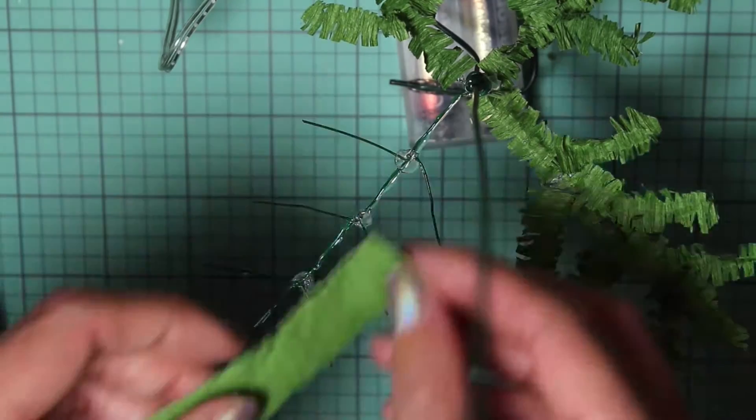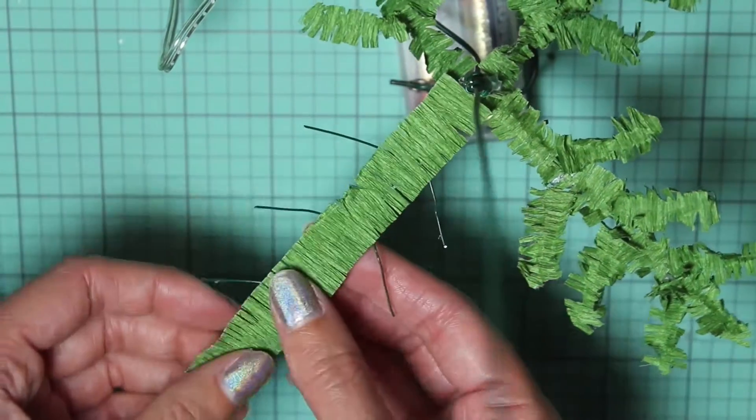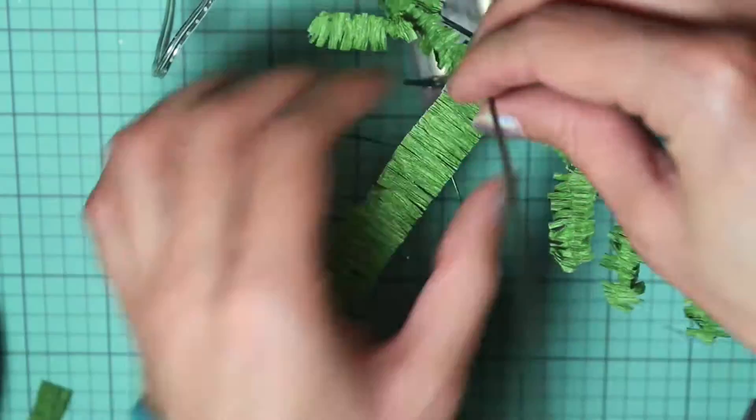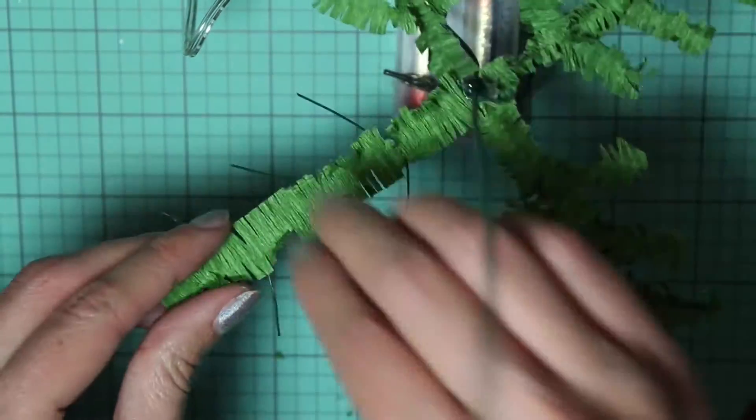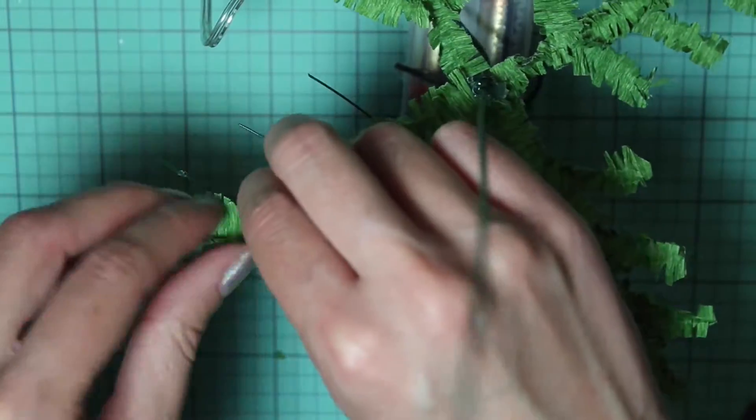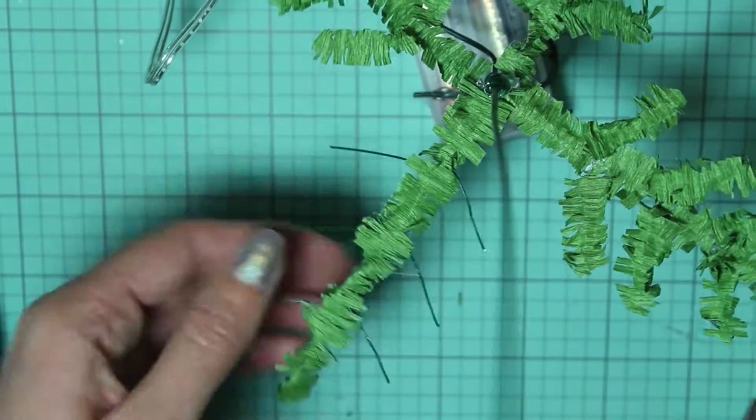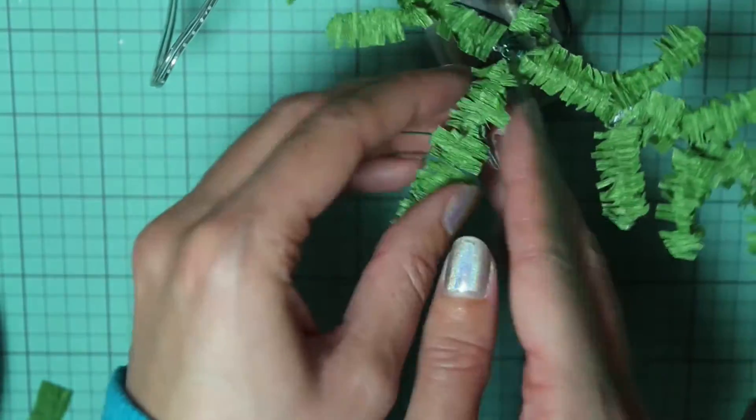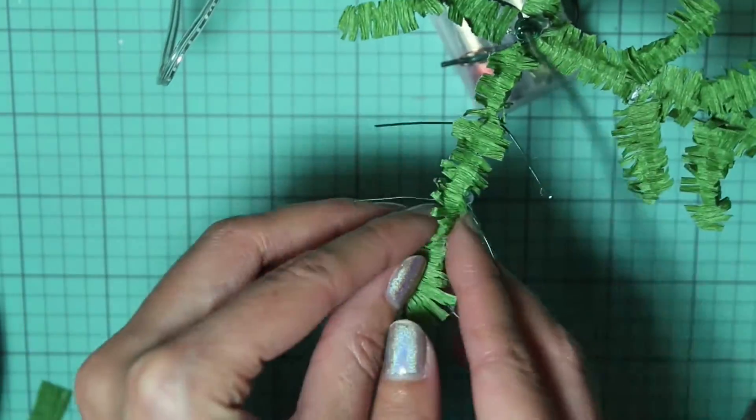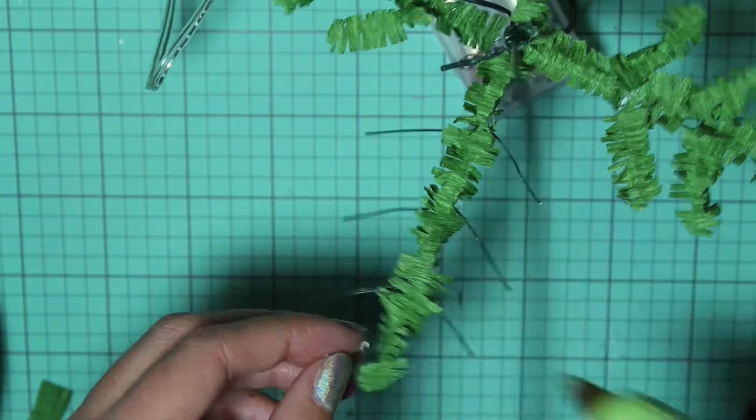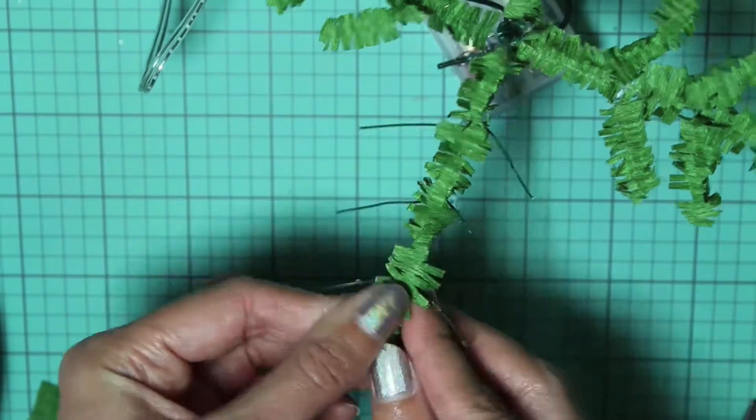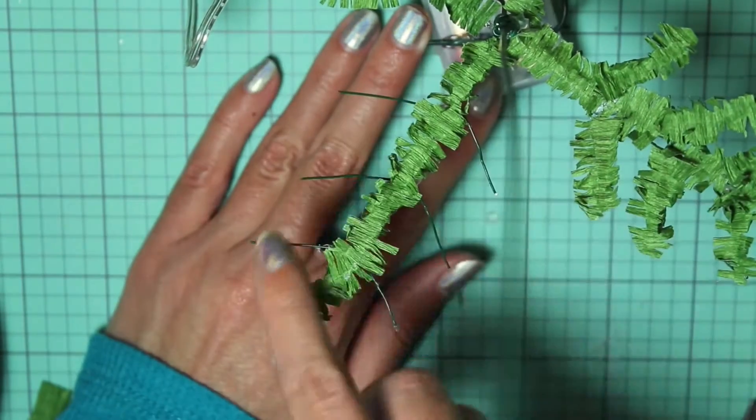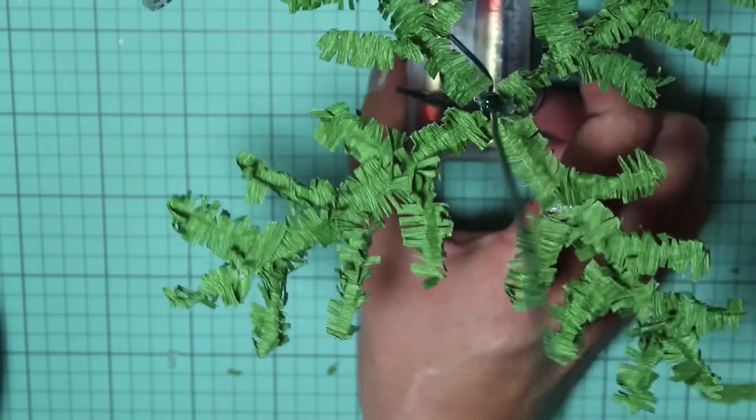Once you've done that, put some hot glue along the branch and press it in place. Trim any excess off the end, and then you're just gonna go along the branch and just kind of crinkle up the fringe so it starts to resemble pine needles. If there's any places that are coming off, go ahead and glue those again. When you're happy with how it looks, repeat the same process on the shorter pieces.